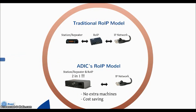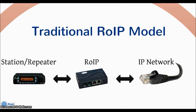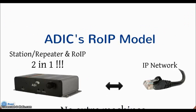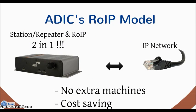Here are the reasons why you should use ADIC's R.O.I.P. As you can see, there are two types of connected models. In the traditional R.O.I.P. model, a station or repeater is connected with R.O.I.P., and then connected to IP network. In ADIC's R.O.I.P. model, a station or repeater and an R.O.I.P. are combined together in one machine, and then connected to IP network directly. With ADIC's R.O.I.P. model, no extra machines are needed, which will save costs for you as well.